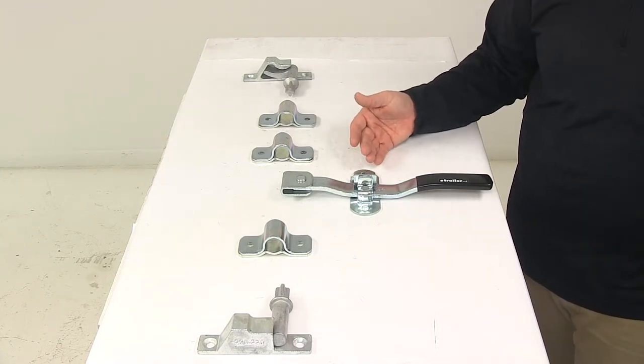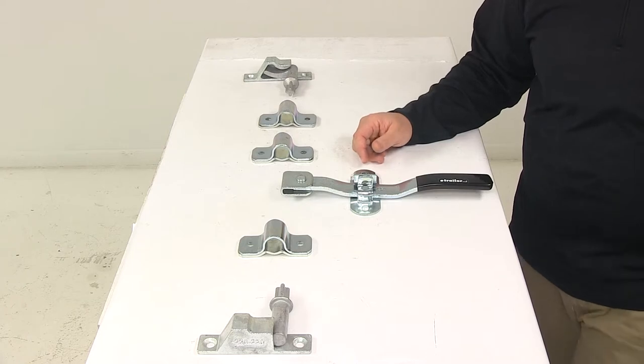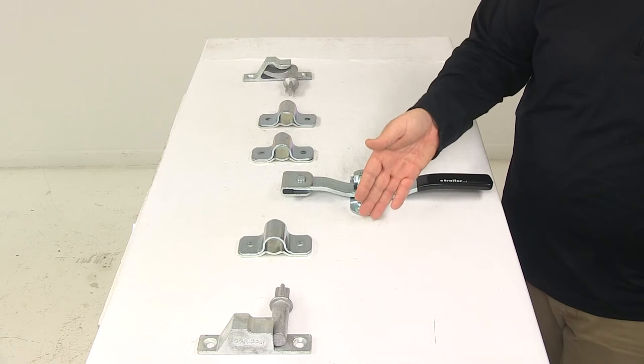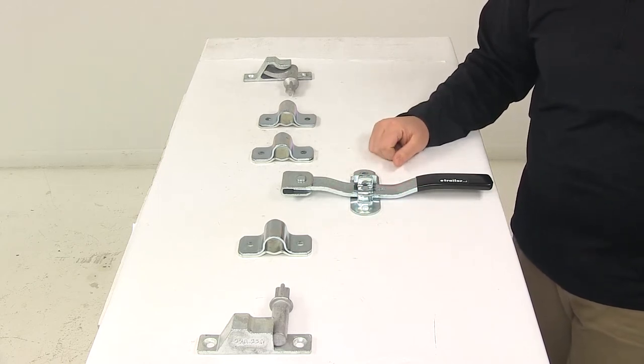Padlock is not included either, so if you're interested in something like that you can check out some options at eTrailer.com. That length of that keeper bracket is going to be about five to five and one-eighth of an inch long.